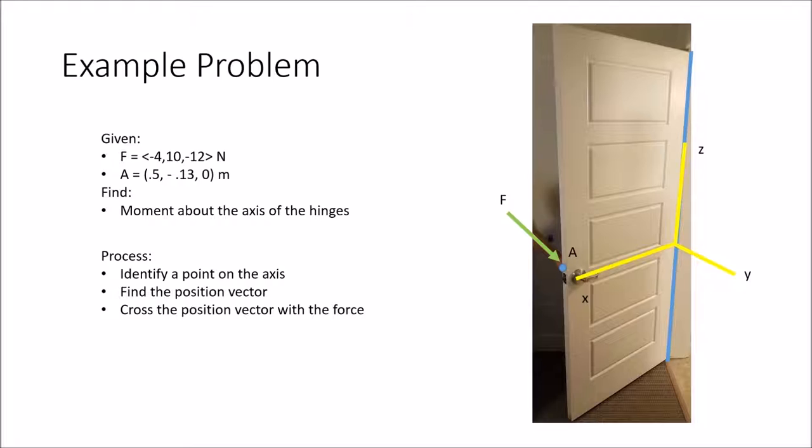Next I'll take the cross product of my position vector and my force vector to find the moment about the point that I chose, in this case the origin.